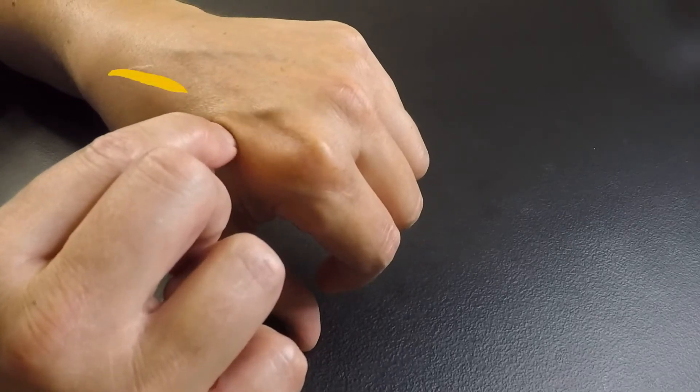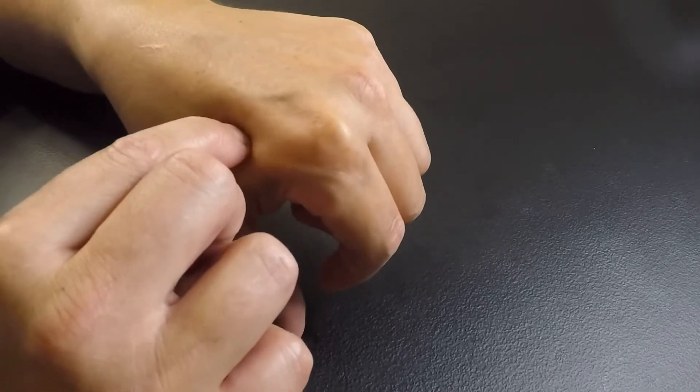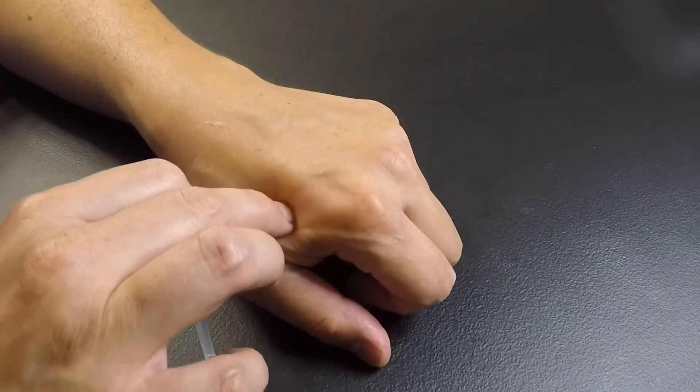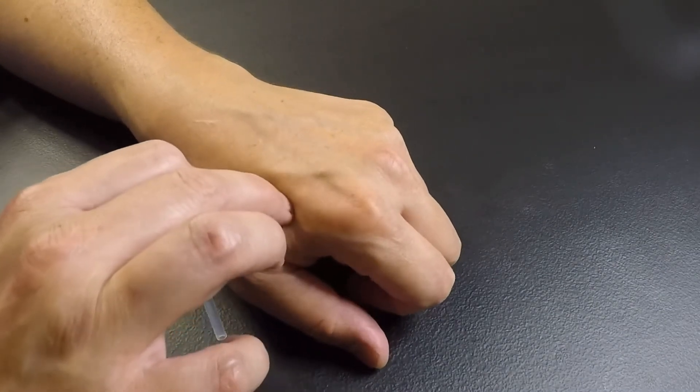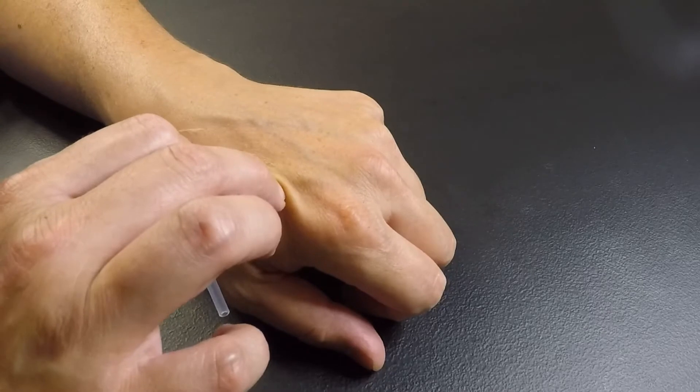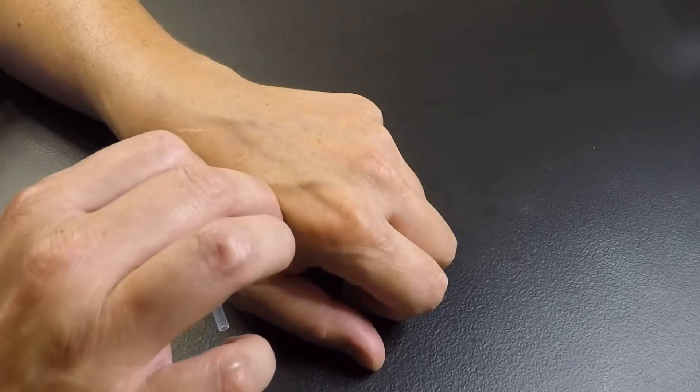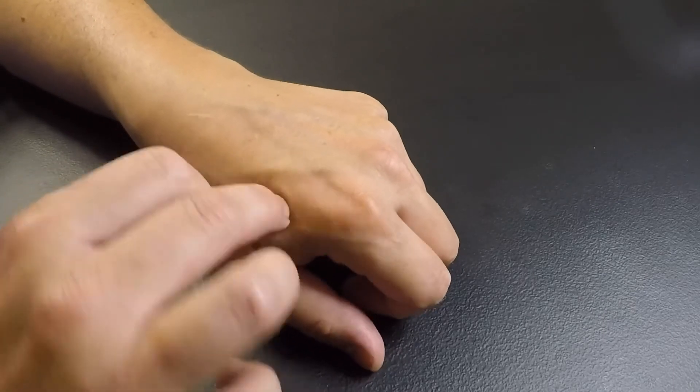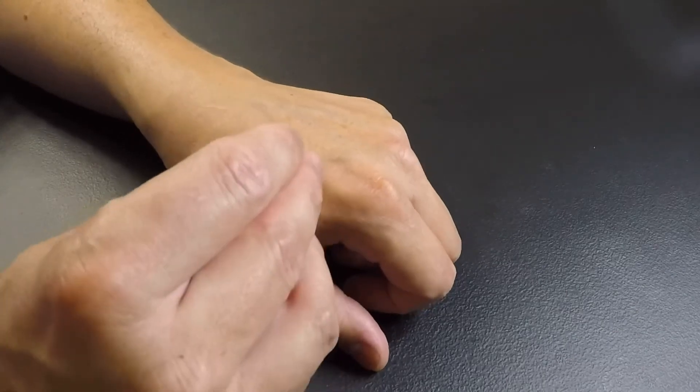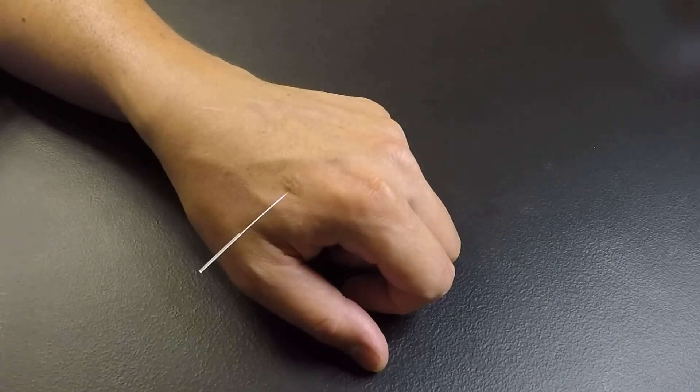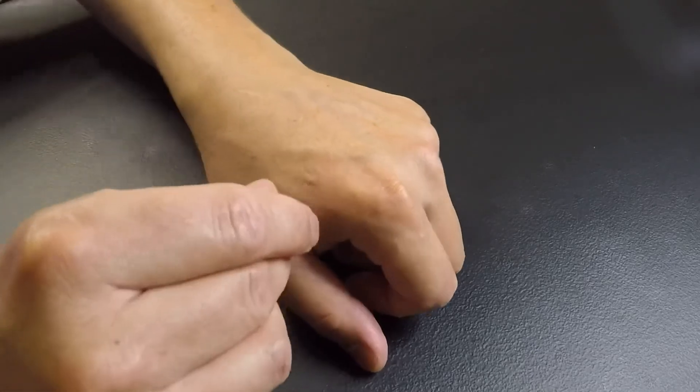When doing acupuncture here, we want to isolate where that nerve is and mark with our fingernail where the path or surface of the nerve is, so that we insert the needle underneath the nerve rather than directly into it.